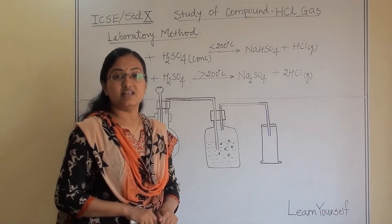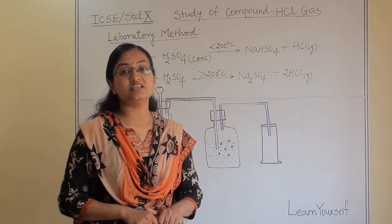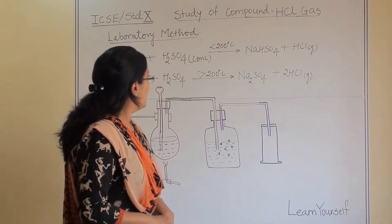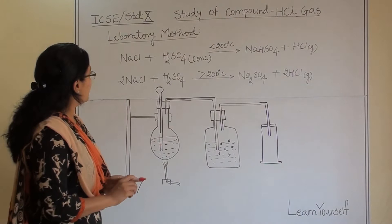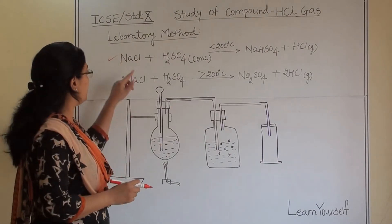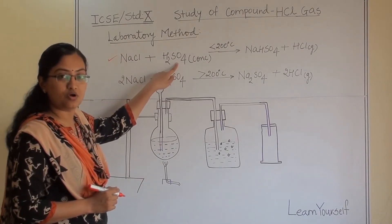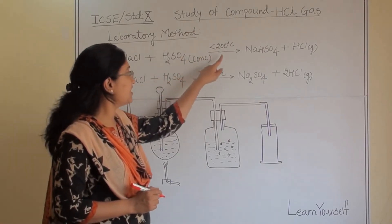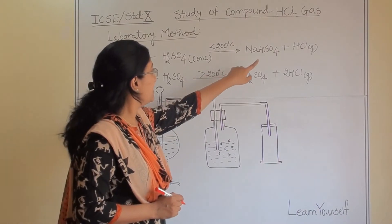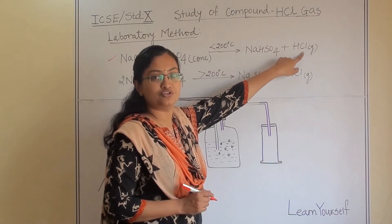Let us see the laboratory method for hydrogen chloride gas. This topic is under ICSE Standard 10 syllabus from the chapter Study of Compounds. In the laboratory method we follow the metallic chloride equation. We have taken sodium chloride reacting with concentrated sulfuric acid, maintaining temperature below 200°C, and we get sodium bisulphate and hydrogen chloride gas.